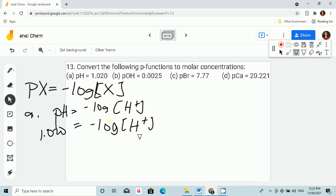Now, how are we going to get the value of H plus? We will use the anti-log. We will use anti-log 10 raised to the power of the value of pH, 1.020, negative since it's negative log.